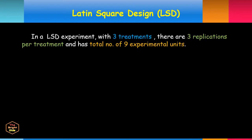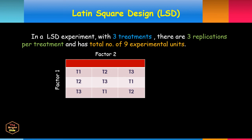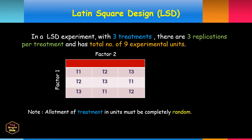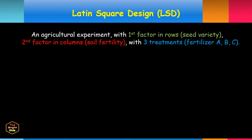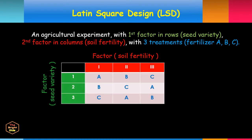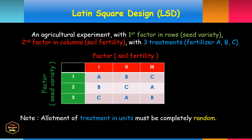In an LSD experiment with three treatments, there are three experimental units per treatment and a total of nine experimental units. Here is the illustration table for that design. Another example is an agricultural experiment with factor in rows being seed variety, factor in columns being soil fertility, and three treatments: Fertilizer A, B, and C. Note the random allotment of treatments in each case.